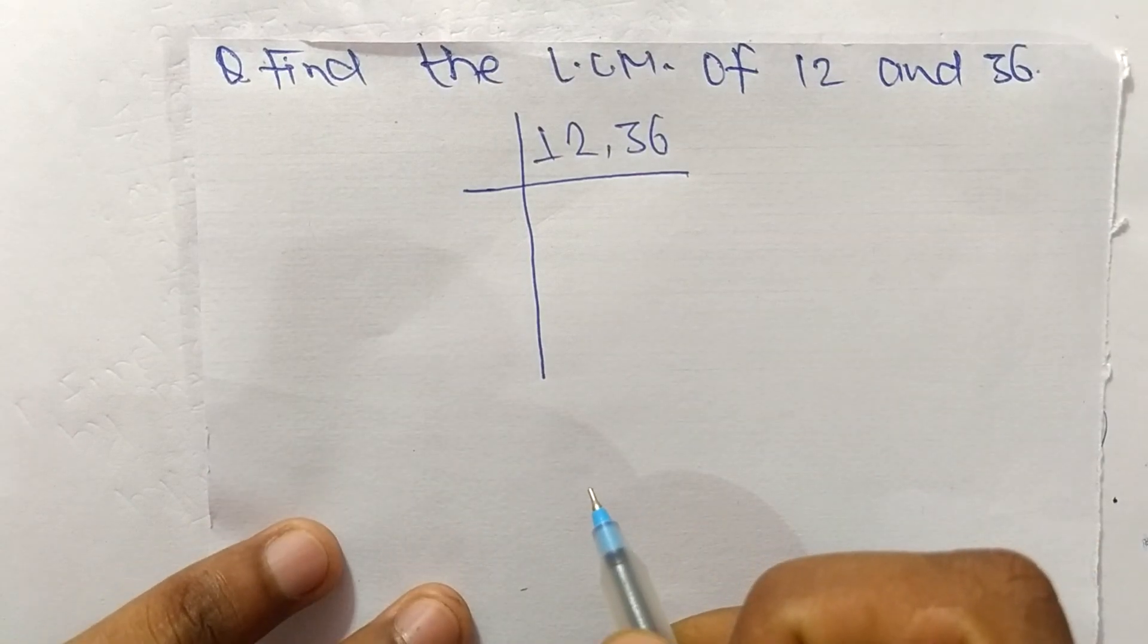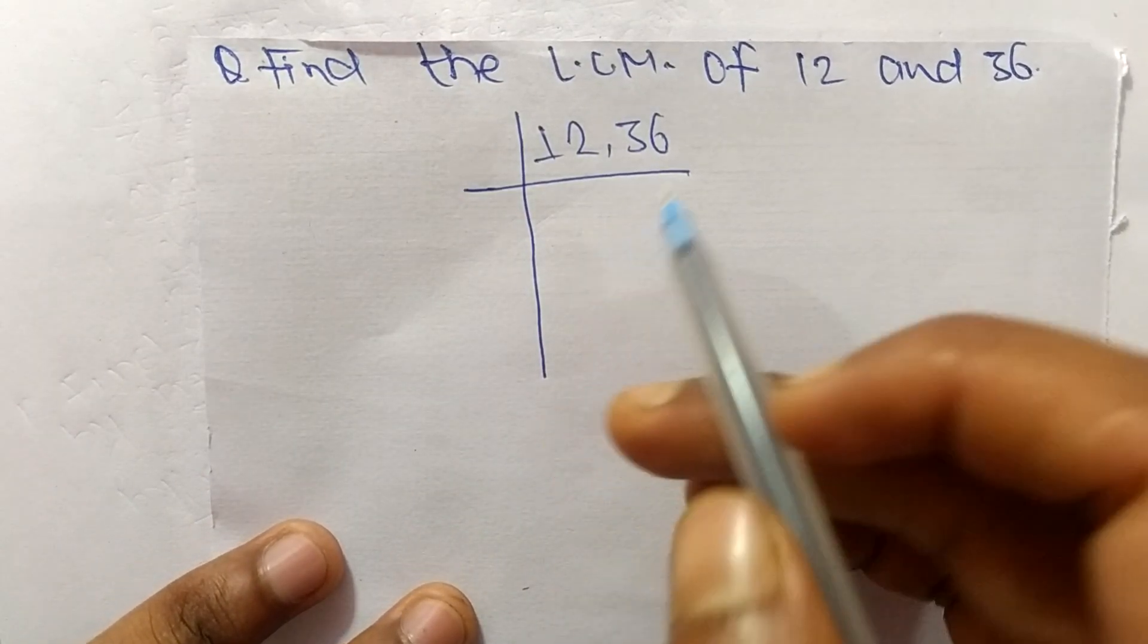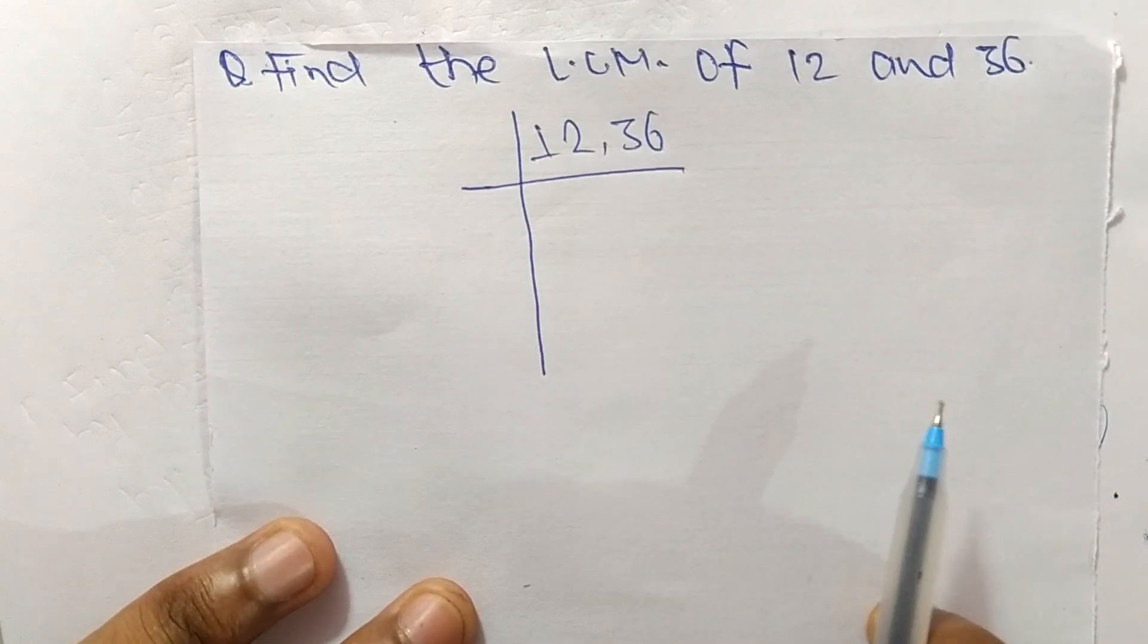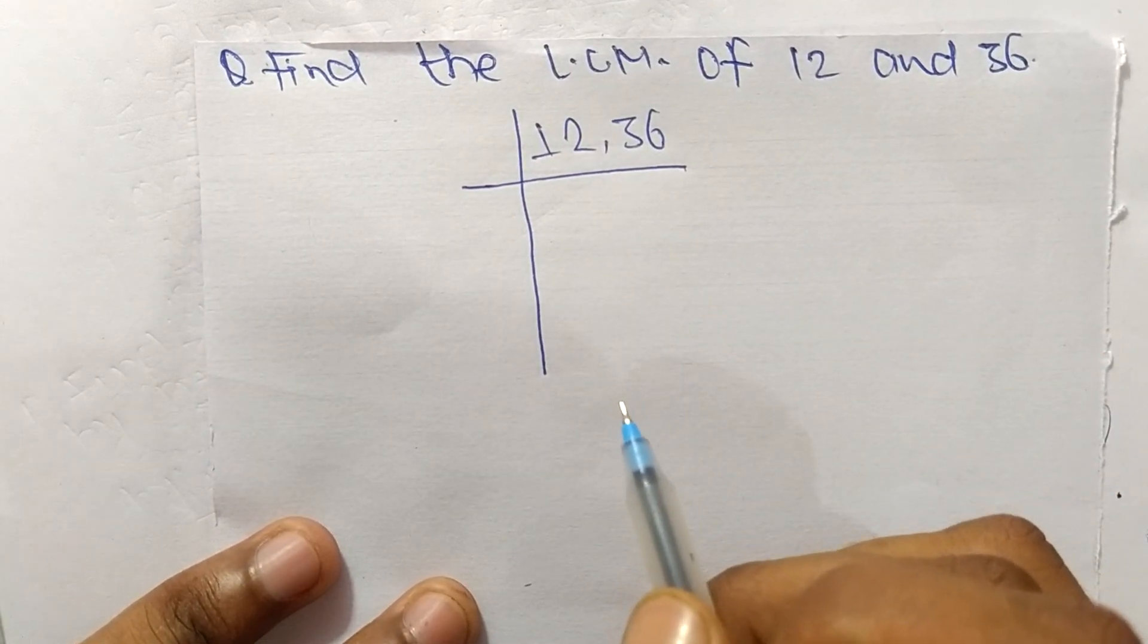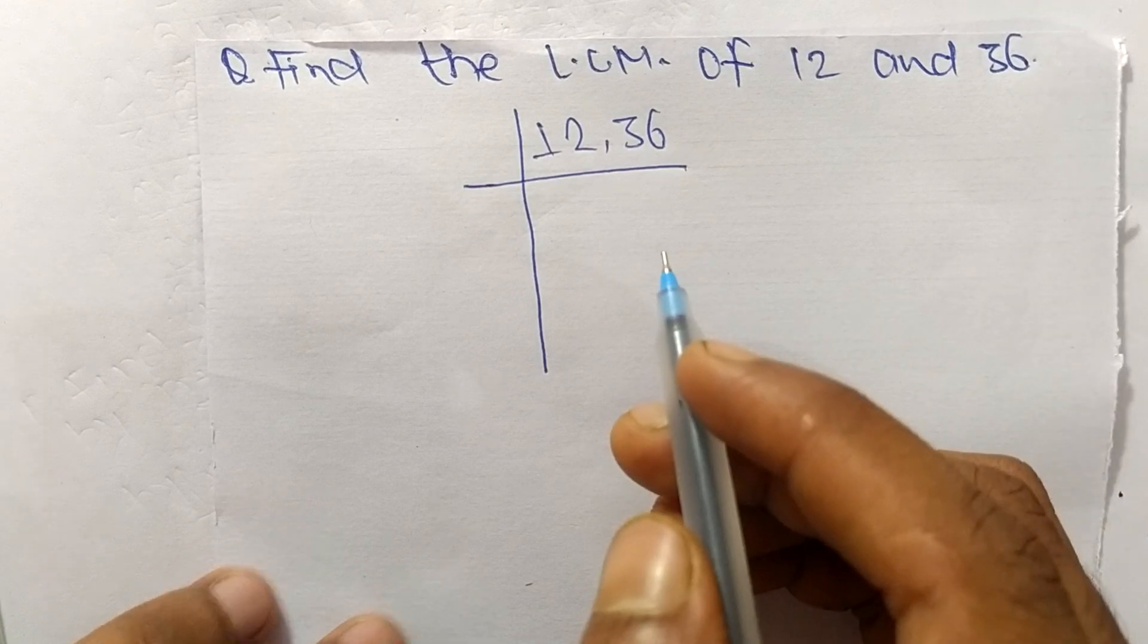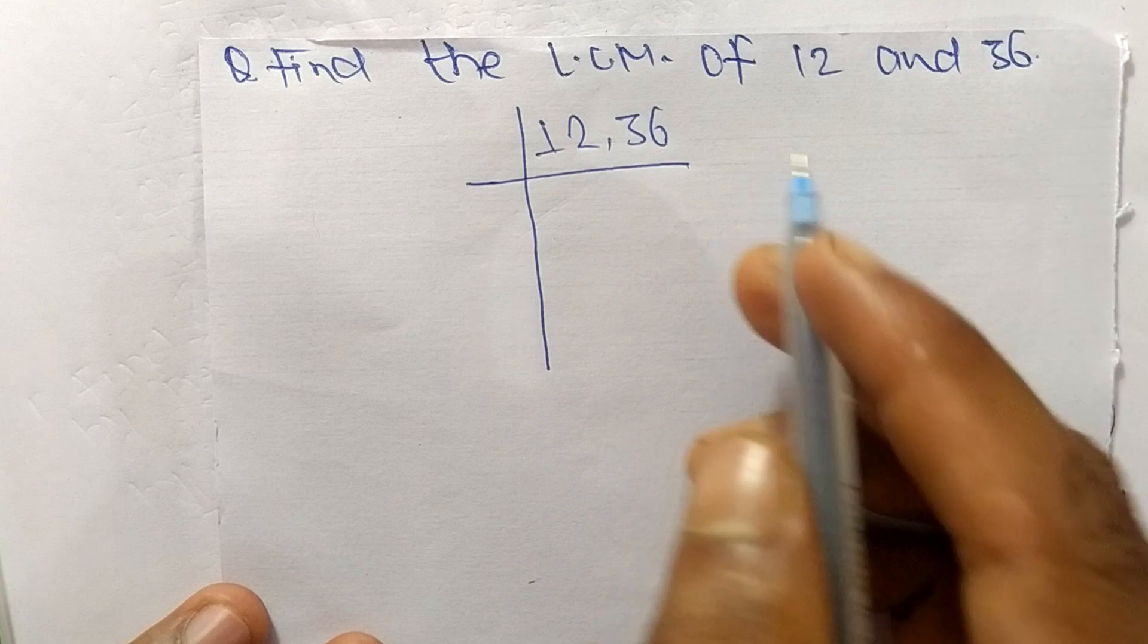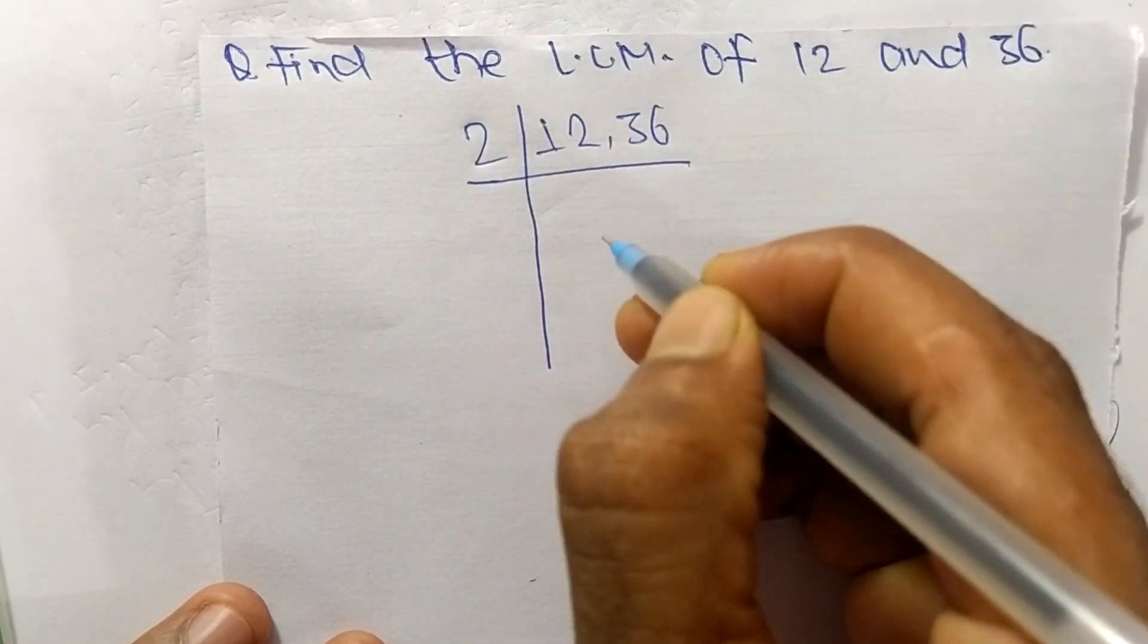So today in this video we shall learn to find the LCM of 12 and 36. To find LCM, first of all we choose the lowest number that can exactly divide 12 and 36. So the number here is 2.